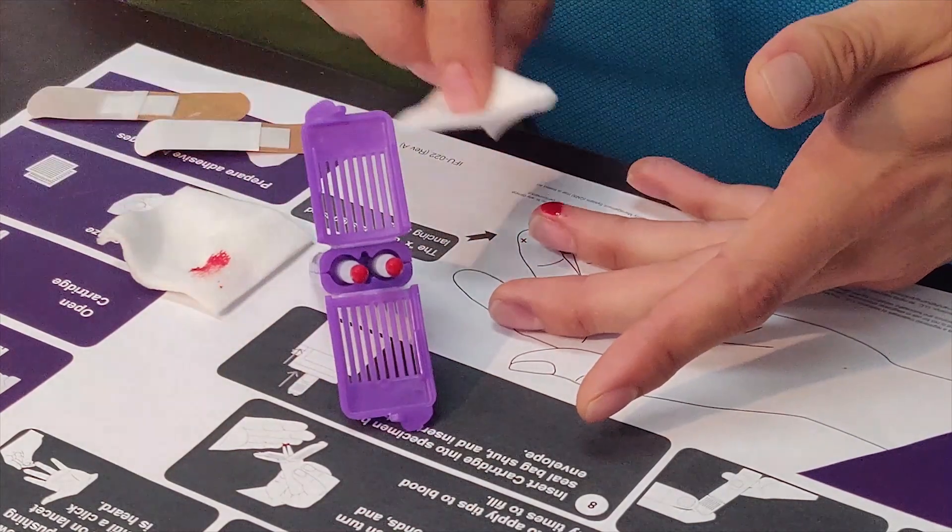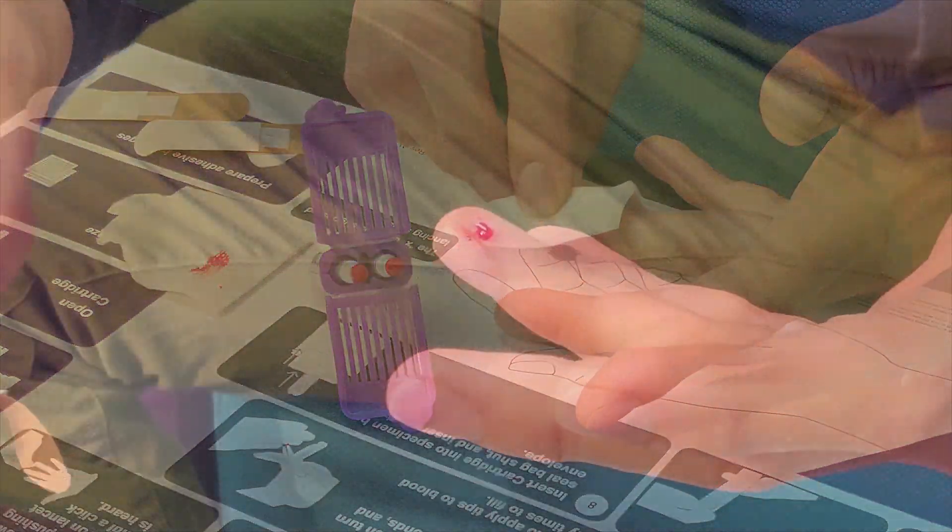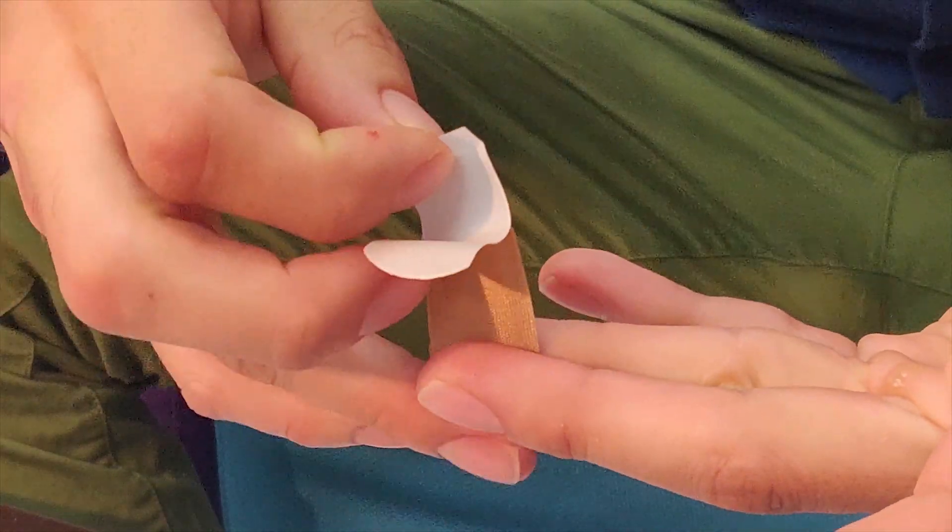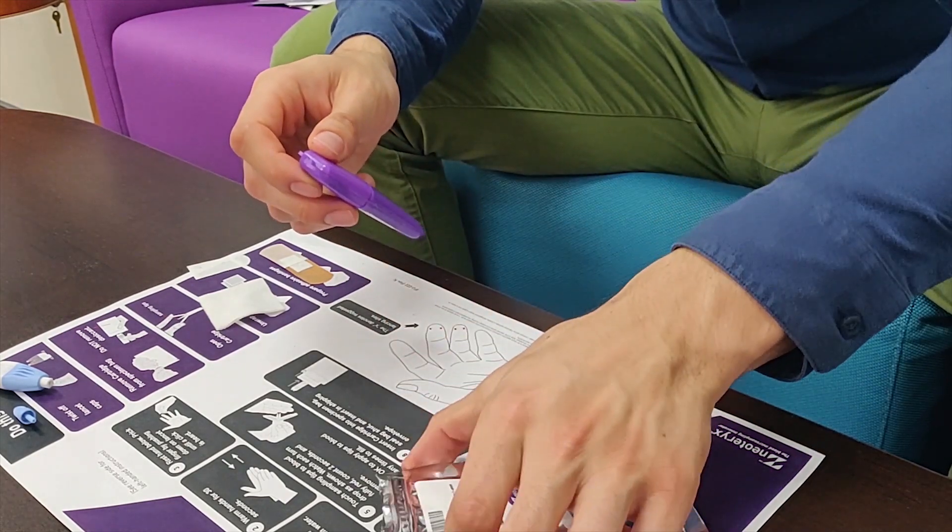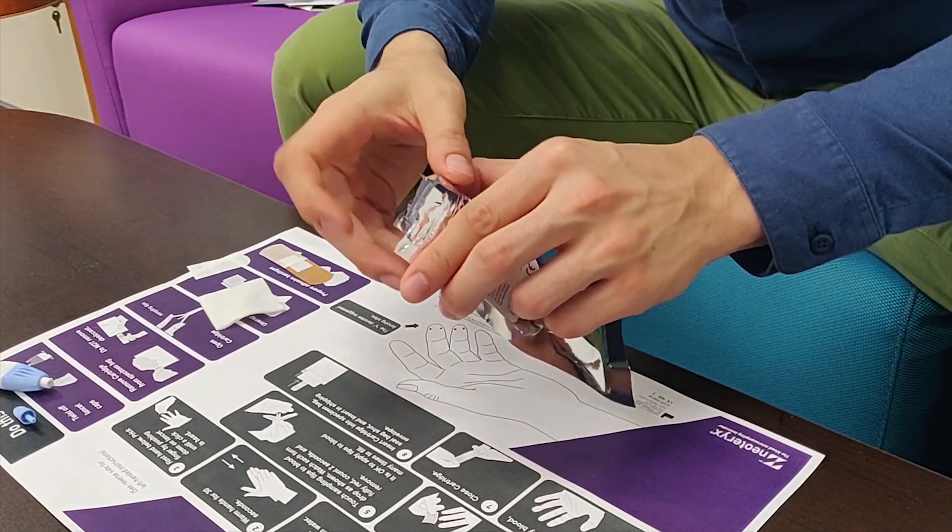Put down the device. Use the gauze to wipe away any excess blood and bandage your finger. Close the Mitra device and place it in the specimen bag with the desiccant. Seal it shut.